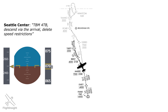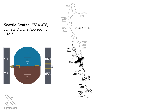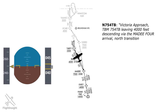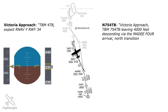ATC is our friend, though, and when it's time to issue the descent instruction, we hear: 'TBM 754 Tango Bravo, descend via the arrival, delete speed restrictions.' This means we can descend without worrying about the maximum speed at Belt of 210 knots — though we still must stay below 250 knots below 10,000 feet. Seattle Center then gives us a handoff: 'TBM 754 Tango Bravo, contact Victoria Approach on 132.7.' Switching frequencies, we report: 'Victoria Approach, TBM 754 Tango Bravo, leaving 4,000 feet, descending via the MADI-4 arrival, north transition.' The approach controller then assigns an instrument approach: 'TBM 754 Tango Bravo, expect RNAV Yankee, runway 34.'